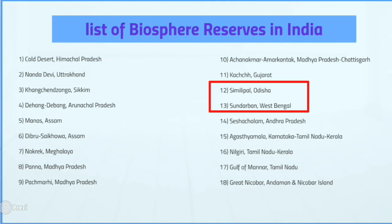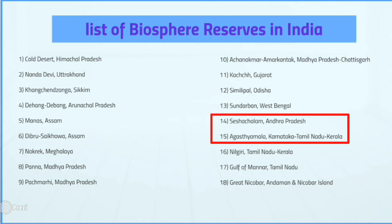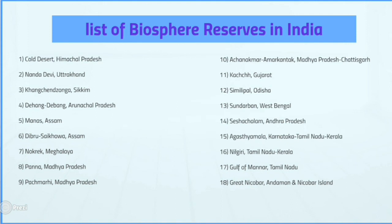You can remember: 'Simple Sea Odni, A Sundarwan West Bengal' — meaning Simlipal is Odisha and Sundarbans is West Bengal. Seshachalam Hills is in Andhra Pradesh. Agasthyamalai is in Karnataka, Tamil Nadu, and Kerala. Gulf of Mannar is in Tamil Nadu. With this, we have covered almost all biosphere reserves.